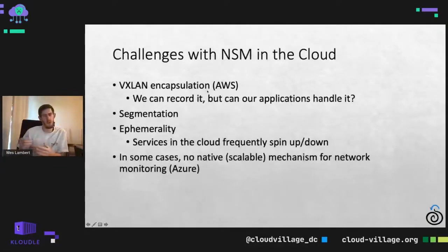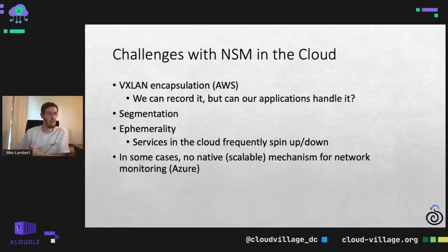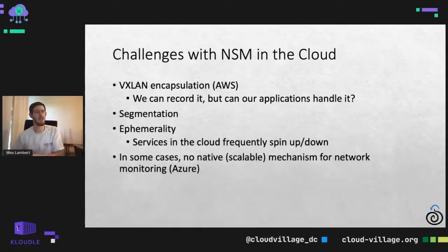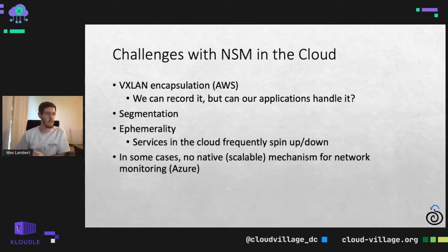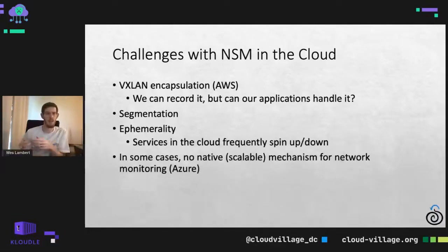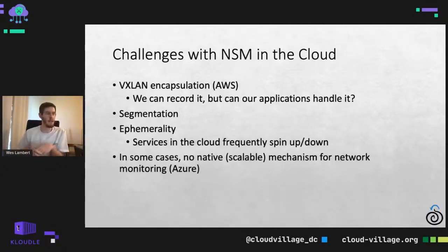Some of those challenges include things like VXLAN encapsulation — some applications are not going to be able to decapsulate that traffic. We can record the traffic maybe, but will those applications be able to know what is inside of the VXLAN tunnel? There are also things like segmentation and ephemerality — services in the cloud frequently spin up and spin down. Sometimes that's difficult to monitor if certain characteristics of those instances change.